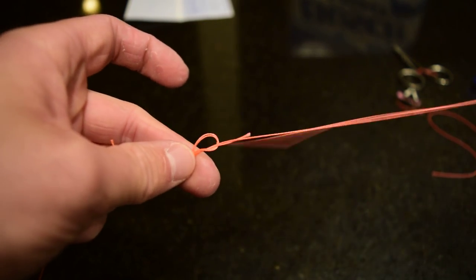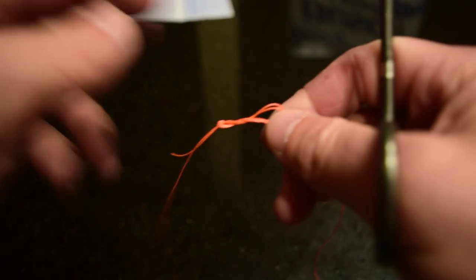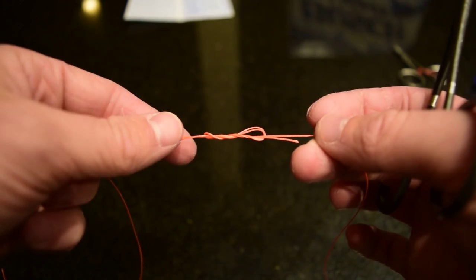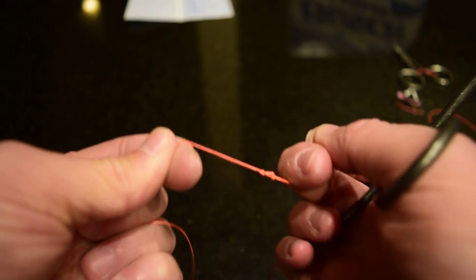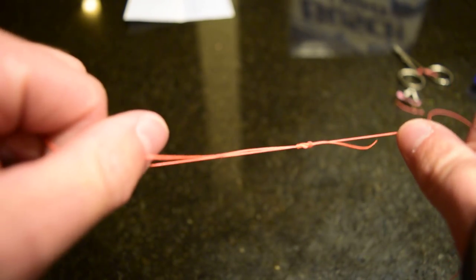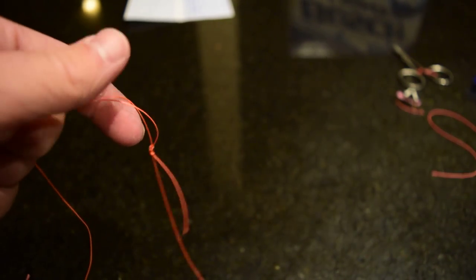Probably would help if I had two different colors of backing, but whoops. So now we have our knot formed, and we're just going to pull that down tight, of course wetting it or whatever you want to use—saliva, stream water.